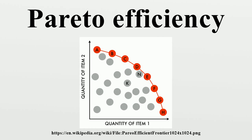Pareto efficiency, or Pareto optimality, is a state of allocation of resources in which it is impossible to make any one individual better off without making at least one individual worse off. The term is named after Vilfredo Pareto, an Italian engineer and economist who used the concept in his studies of economic efficiency and income distribution. The concept has applications in academic fields such as economics, engineering, and the life sciences.